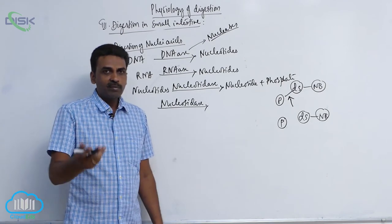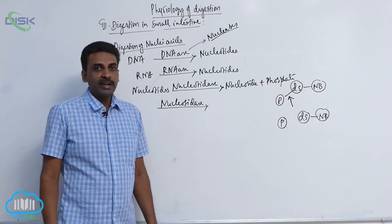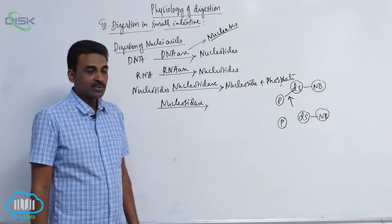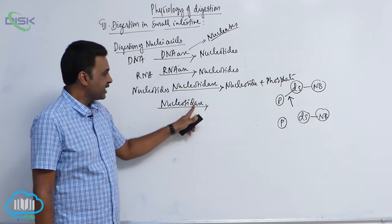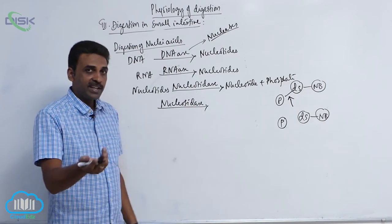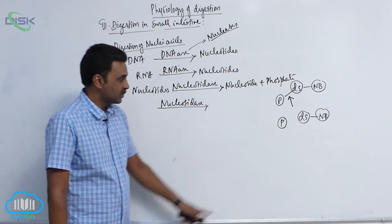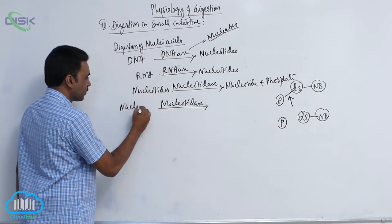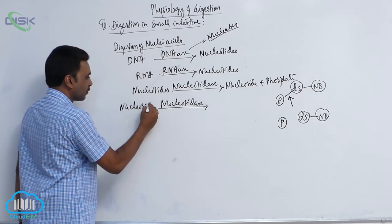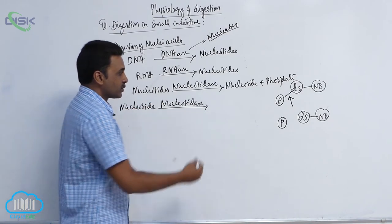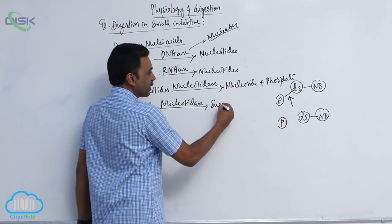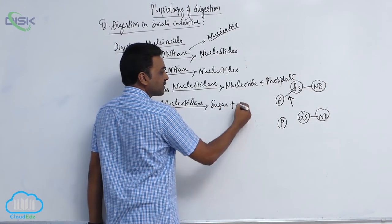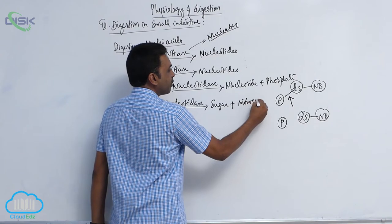Nucleotidase comes from intestinal juice and nucleosidase also comes from intestinal juice. Nucleotidase acts on nucleotides, breaking the bond to produce nucleosides plus phosphate. Nucleosidase then acts on nucleosides, separating the sugar and the nitrogen base.